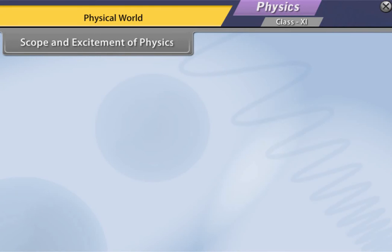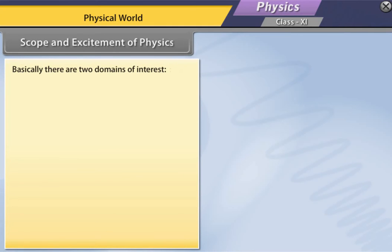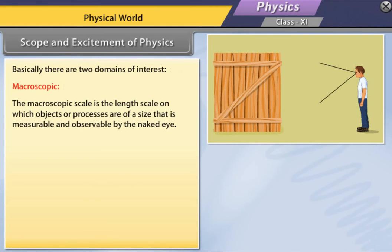Scope and excitement of physics. From a person beginning to walk to communication over thousands of kilometers, physics has very wide scope. Basically there are two domains of interest: macroscopic. The macroscopic scale is the length scale on which objects or processes are of a size that is measurable and observable by the naked eye.